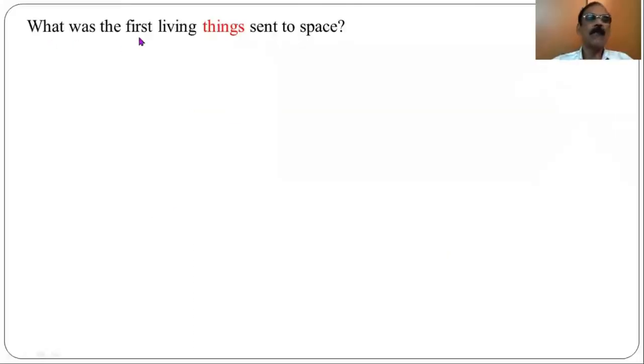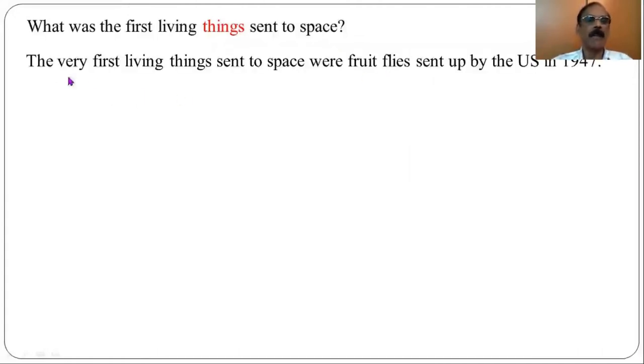What was the first living things sent to space? The very first living things sent to space were fruit flies sent up by the United States in 1947. What was the first animal sent to orbit?